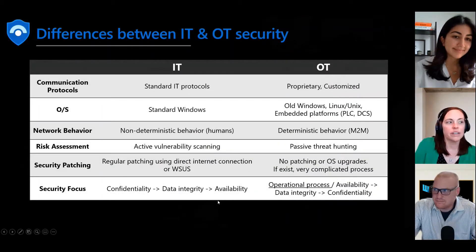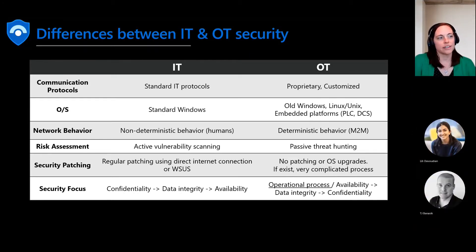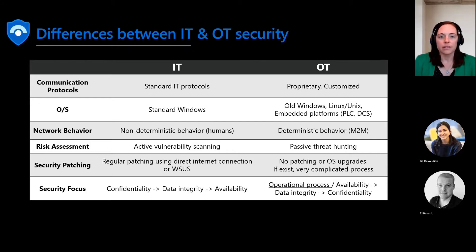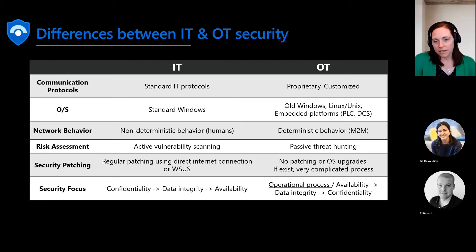Good afternoon everyone. Today there is so much emphasis on securing our IT environments that operational technology is not even a thought. Here are some of the main differences between the two. In IT, you are used to standard IT protocols, updated operating systems, active vulnerability scanning, and confidentiality, data integrity, and availability. On the OT side, it's a little bit different. There are proprietary customized protocols, the operating systems are sometimes older editions, there's passive threat hunting, and security focus is usually on operational process — availability, data integrity, and confidentiality.